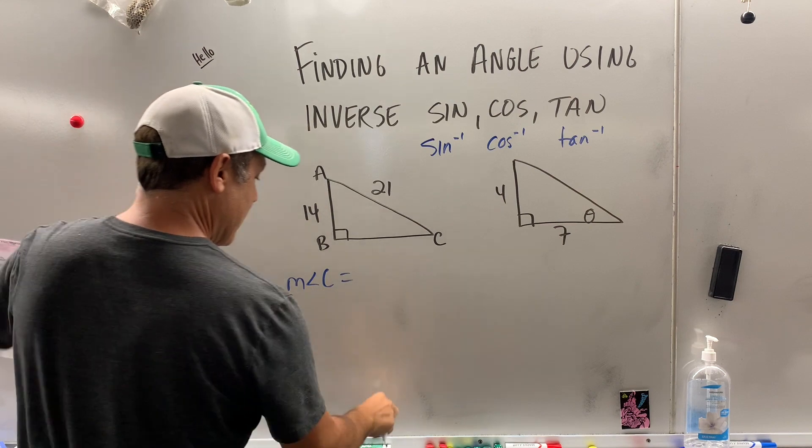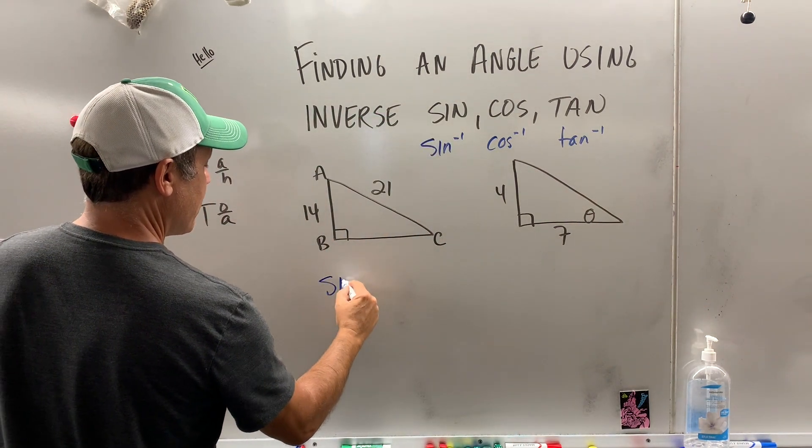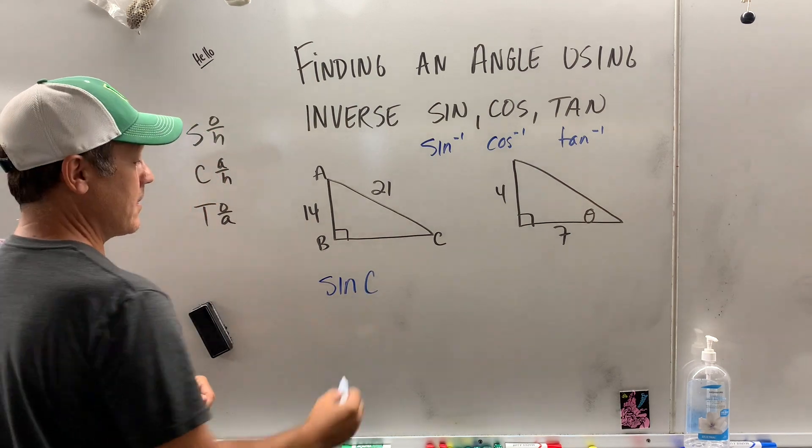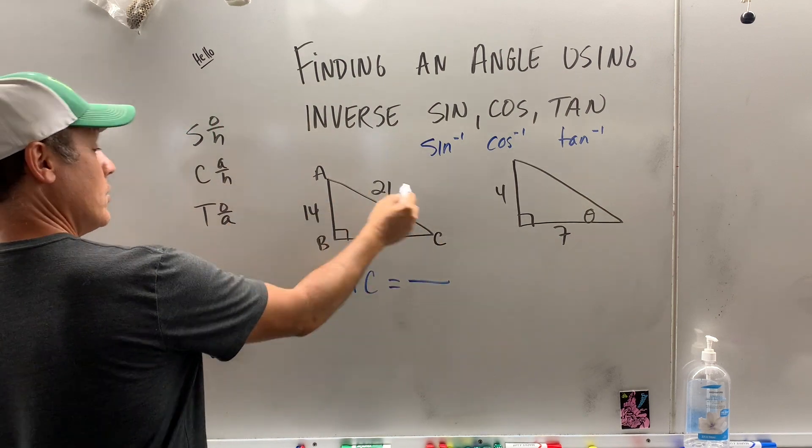If we take the sine of angle C, that is equal to opposite over hypotenuse, some old horse.